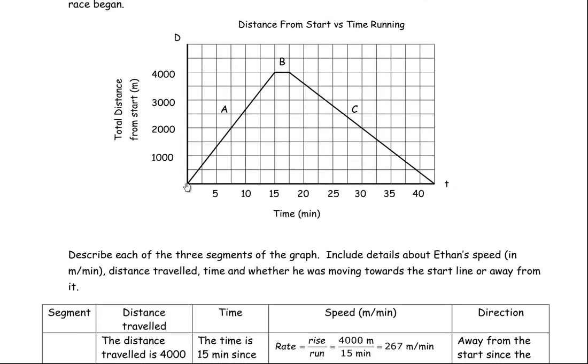So for A here, Line Segment A, and if you notice the scale, every block here for the time is 2 1⁄2 minutes. So that's 2 1⁄2, 5, 7 1⁄2, 10, 12 1⁄2, 15, etc. Vertically each block is 500 meters. So 500, 1,000, 1,500, 2,000, 2,500, etc.